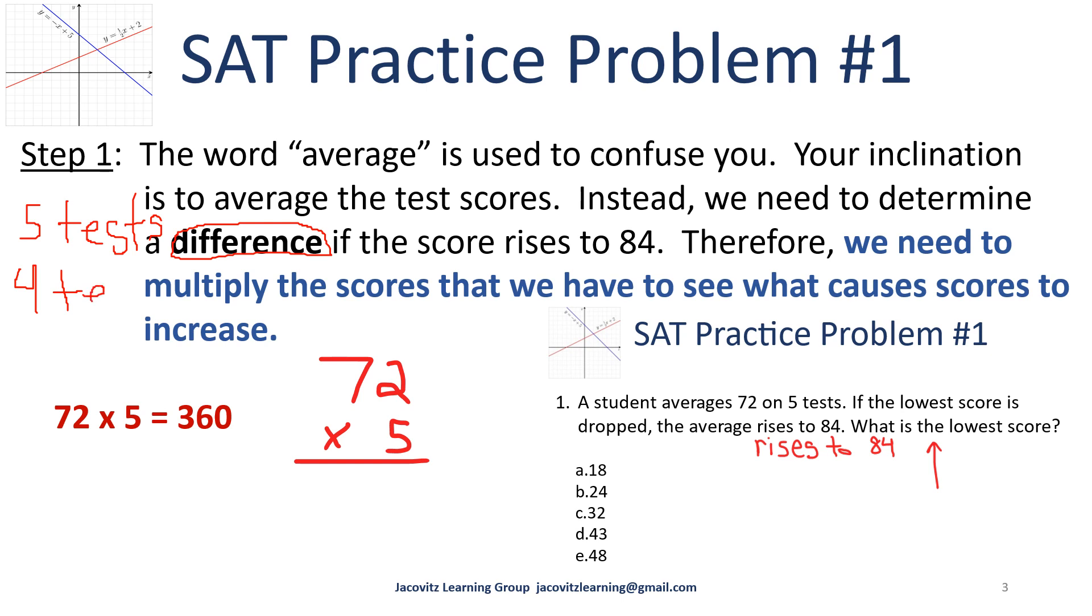So 72 times 5 - let's check our math. We have zero, carry one, 35 times seven is 35. This is 360. So this was for the five tests. Please make sure you keep these numbers separate.